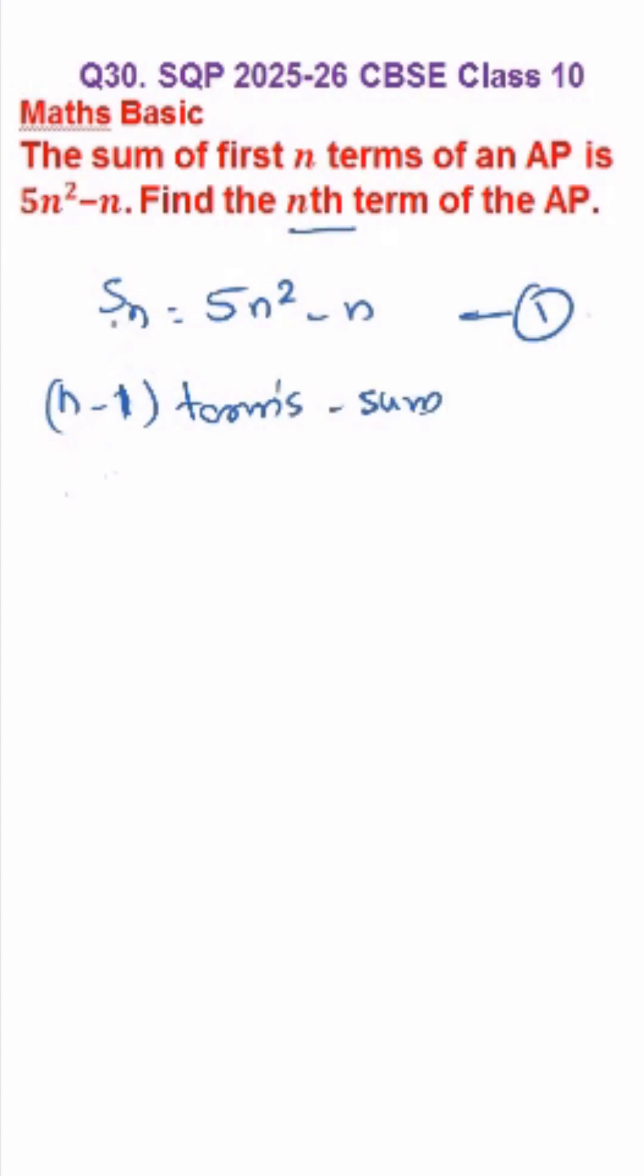So for that we will substitute n minus 1 instead of this n in equation 1. We will get S of n minus 1 is equal to 5 into n minus 1 the whole square minus n minus 1.